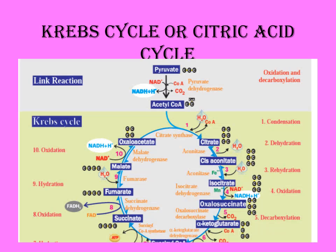In the Krebs cycle, pyruvate is converted into acetyl-coenzyme A. Acetyl-CoA is a two-carbon compound with coenzyme A attached. Acetyl-CoA then combines with oxaloacetate, which is a four-carbon compound, to enter the cycle.